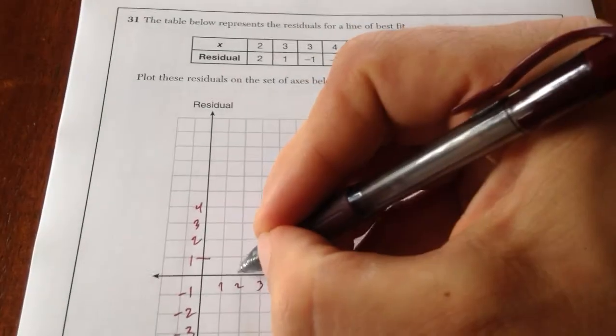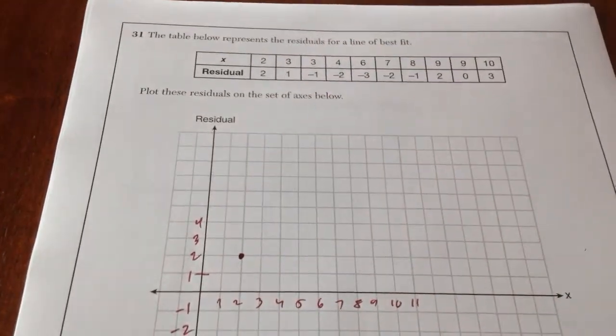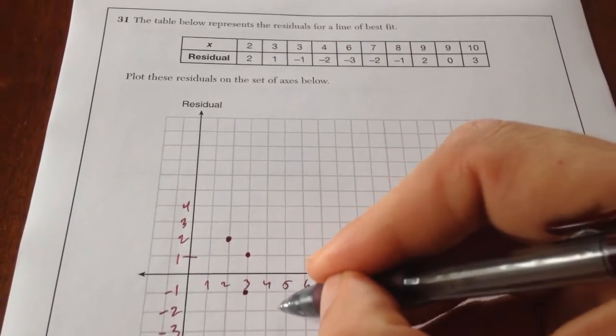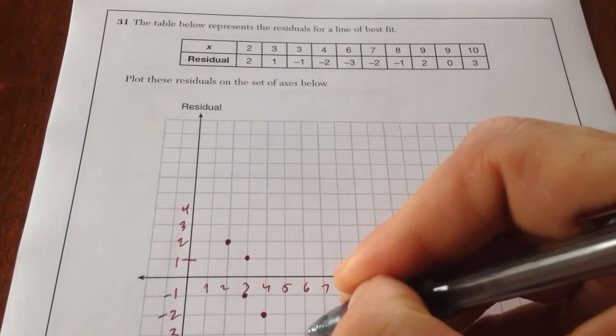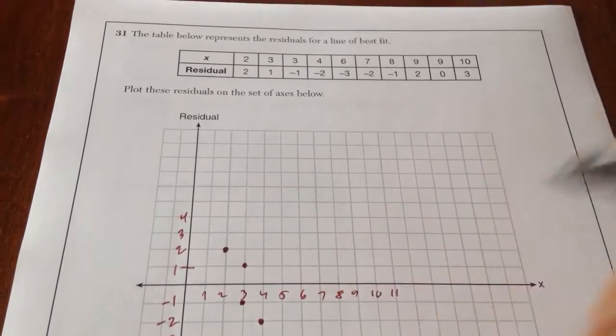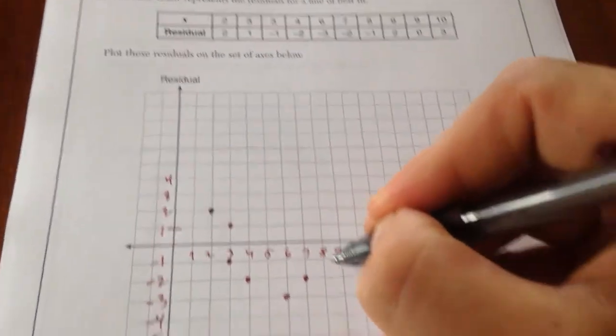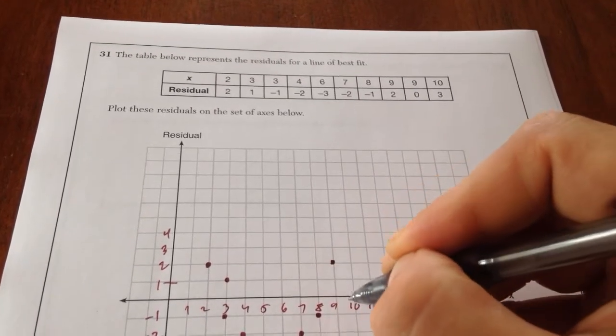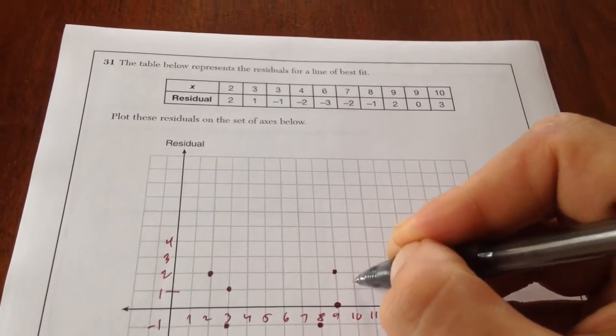So therefore, if my x value is 2, my residual is 2, I'm just plotting the point. Essentially I'm plotting 2, 2. I'm plotting 3, 1. 3, negative 1. 4, negative 2. 6, negative 3. 7, negative 2. 8, negative 1. 9, positive 2. 9, 0. 10, 3.